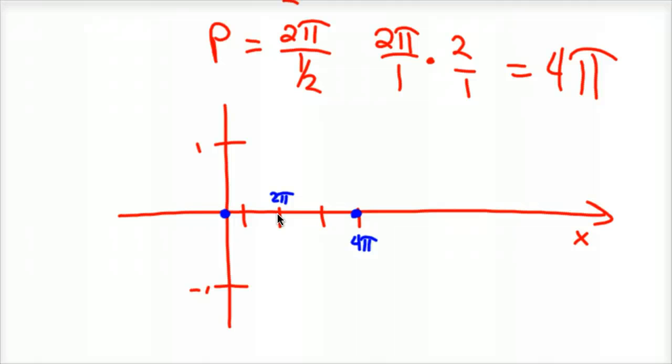And so it would also end up being 0 here. And so if you connect those, so there's up 1 half, down, and then up. Wow, it went a little too low. But that's generally what it looks like.